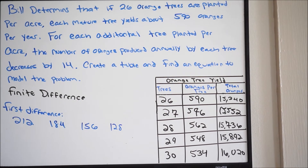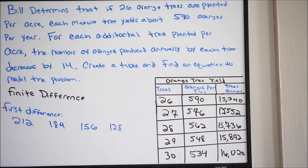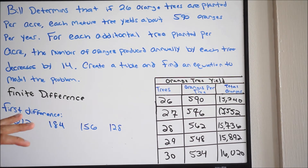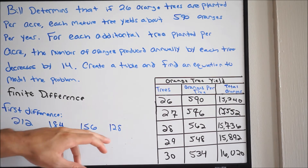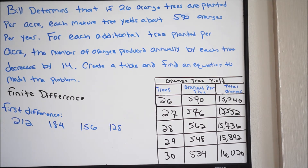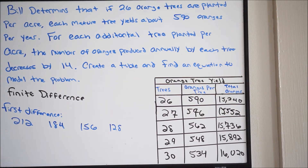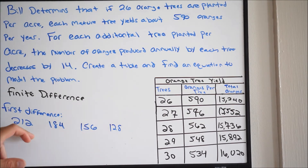So I just went ahead and completed it for the rest of our y values. Here's our first difference. Notice that the change here between our y values is different — right here we have 212, 184, 156, 128. So we know that the first difference didn't work out, meaning it's not going to be linear. First difference is linear, second difference will be quadratic, third difference will be cubic and so on. Since this didn't work out, we need these numbers to be the same, so we're going to move on to the second difference.